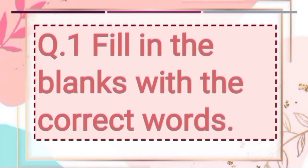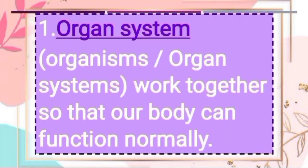Now let's see question 1 — fill in the blanks with the correct words. Question 1, first answer: Organ System. The question is: 'Dash work together so that our body can function normally.' Answer: Organ System work together so that our body can function normally.